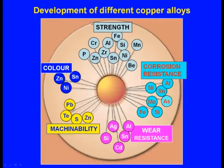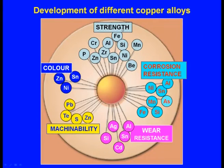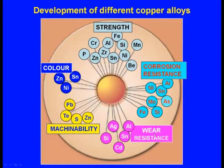Copper alloys have been developed with different objectives. There are five objectives: one is to increase strength, another could be increase of corrosion resistance, or increase of wear resistance, or increase of machinability, and next one increase in color. What your objective is decides the development of the copper alloy.